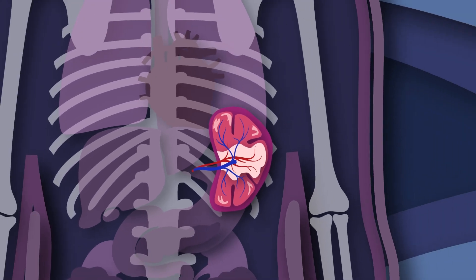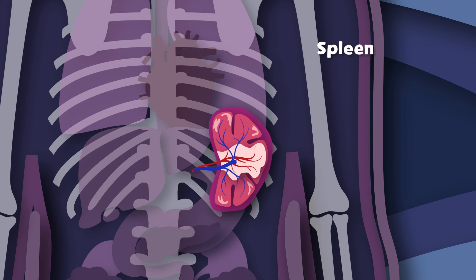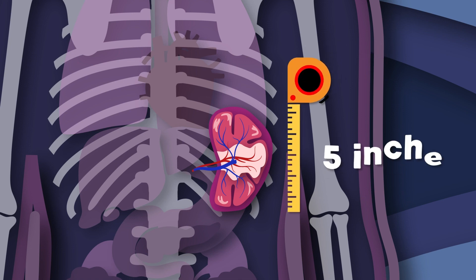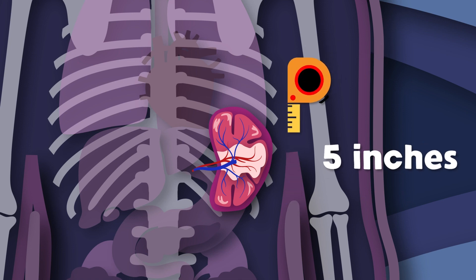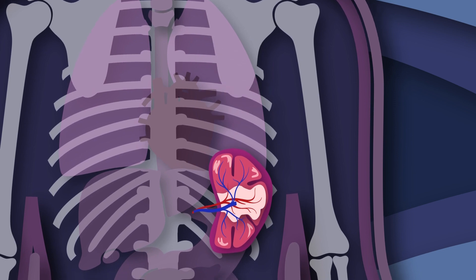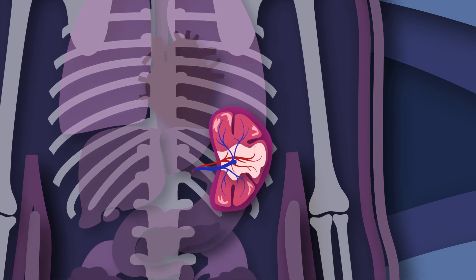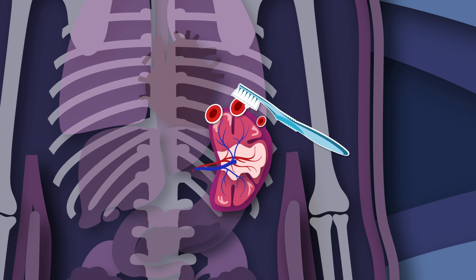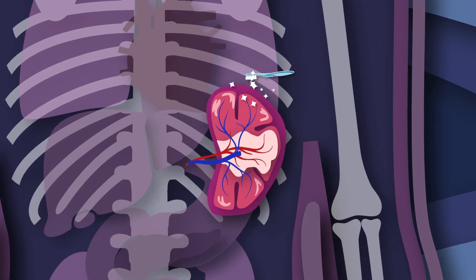I am your spleen. You will learn what this means. I am purple, 5 inches long, and I'm shaped like a bean. I'm your spleen. You will learn what this means. I produce antibodies and I keep your blood clean.